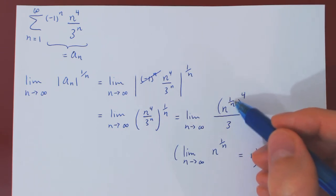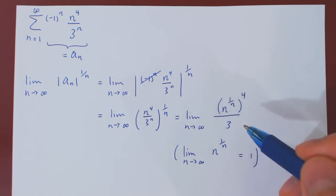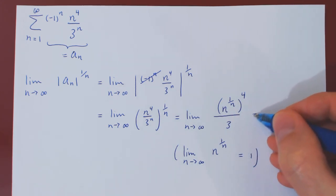So all we are left with is this term is approaching 1 to the 4, 1 to the 4 is 1 over 3, and the limit therefore is simply 1 over 3.